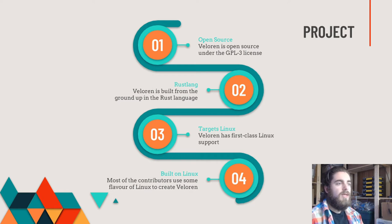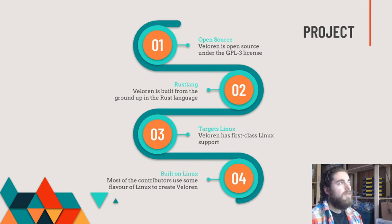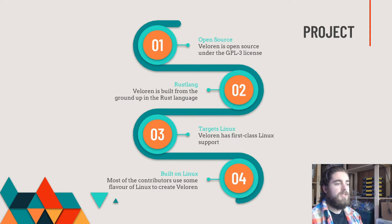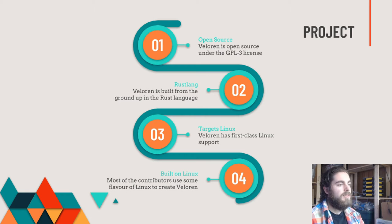Veloran is released under the GPL3 license and was built in Rust from the ground up. When we started in 2018, Rust was a lot younger in the game development space, so we've had to navigate that ecosystem carefully. Veloran targets Linux as a first-class operating system and also builds for Windows and macOS. Since most of our developers work on Linux, it's a high priority to make sure it's well supported.